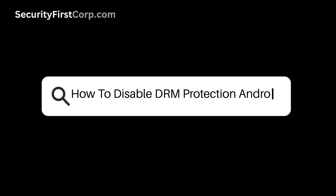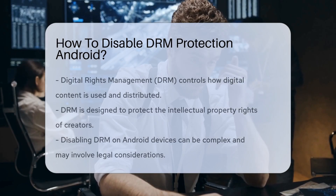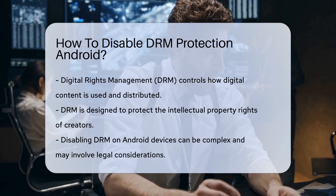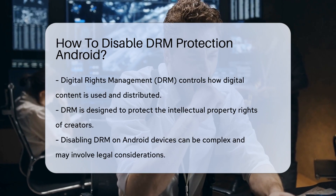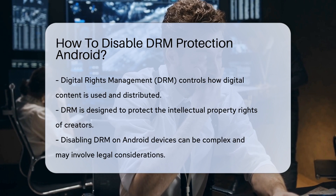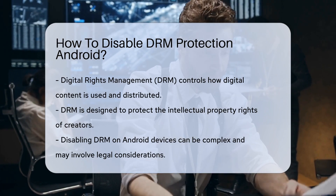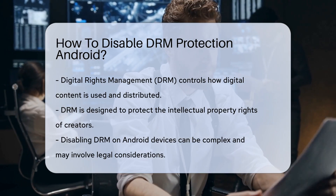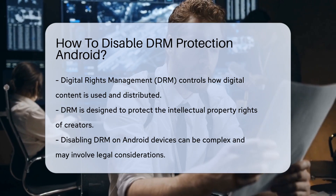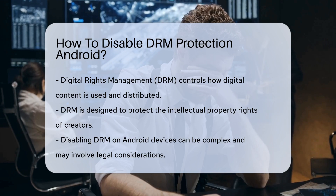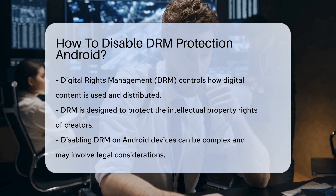How to disable DRM protection on Android? Digital Rights Management, or DRM, is a technology used to control how digital content is used and distributed. It protects the intellectual property of creators. Disabling DRM protection on Android devices can be complex and often involves legal considerations. It is essential to understand that DRM is integrated into many applications and services to prevent unauthorized copying and sharing.